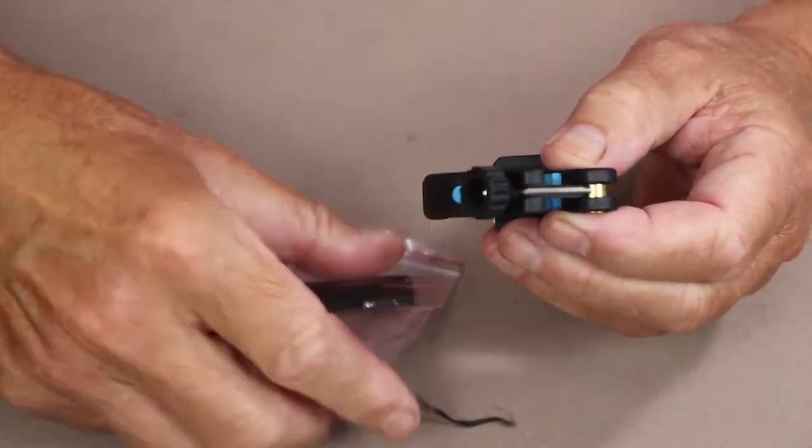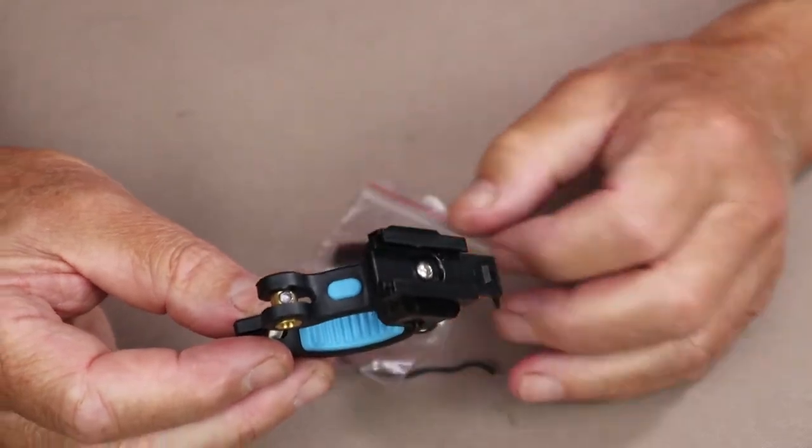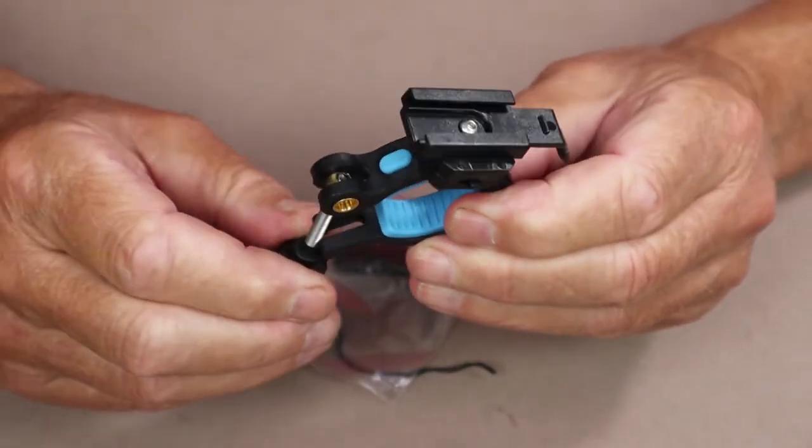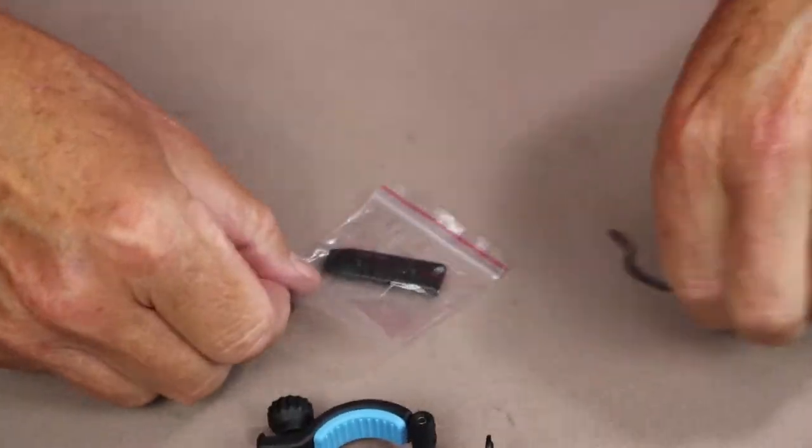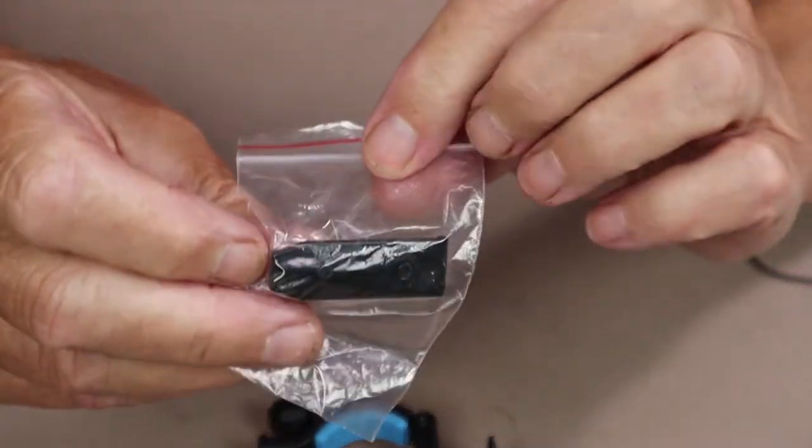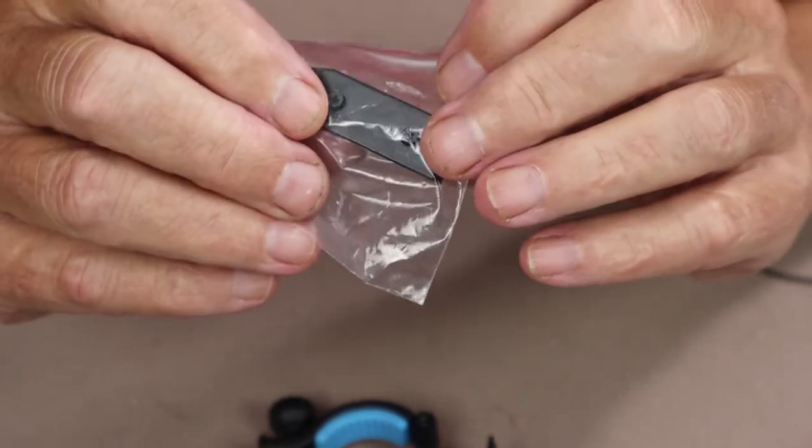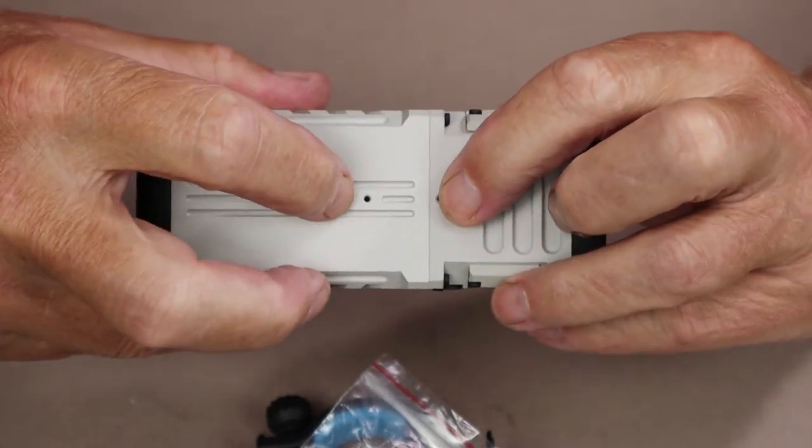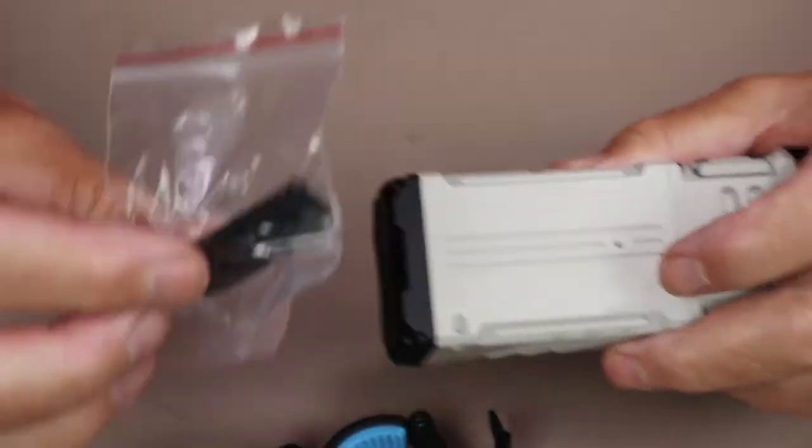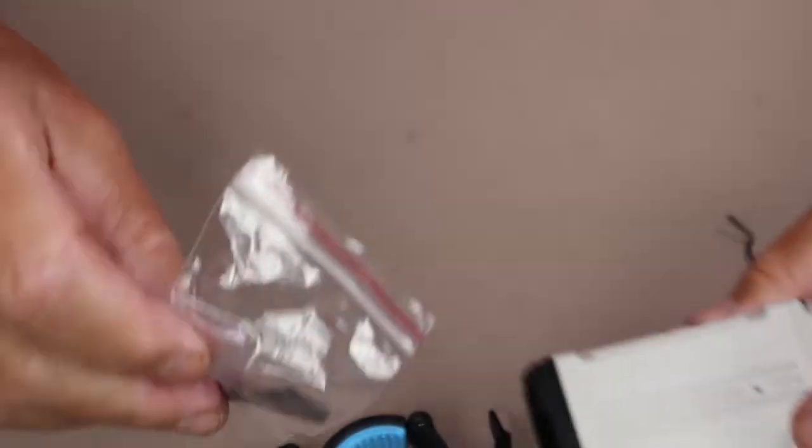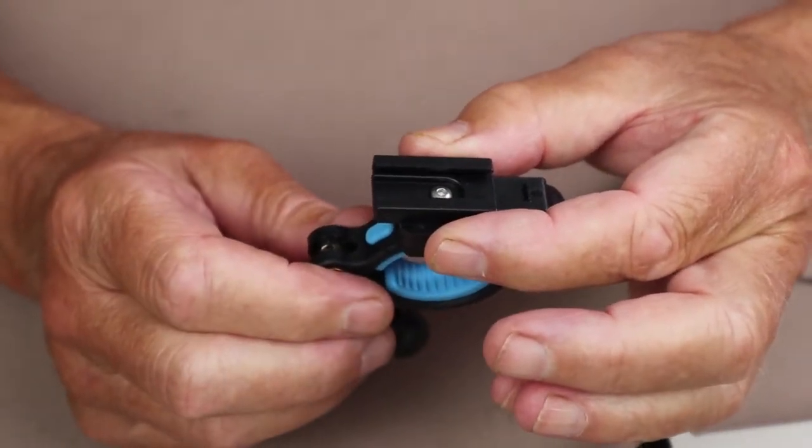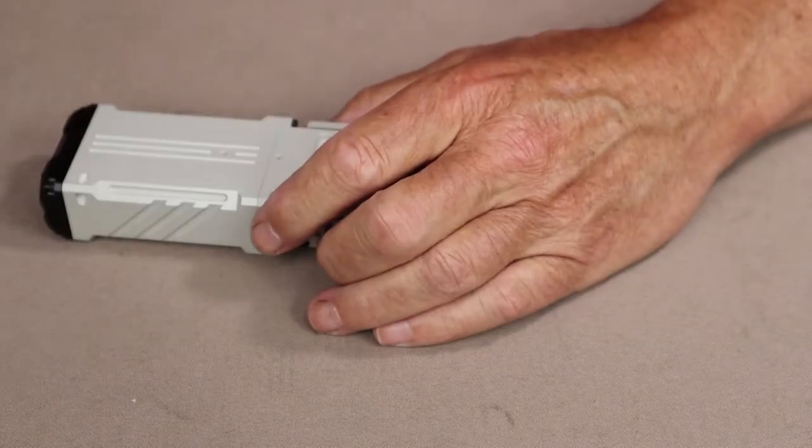Also really interesting and adds to the versatility of this light is this mount for a bicycle. The mount goes around the handlebar, and a small plate screws onto the bottom of the flashlight. The holes are already pre-tapped so that you can put this plate on the bottom and then that slides in and locks into the top of the handlebar mount.